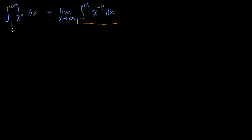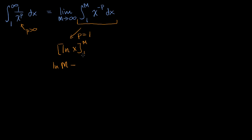There are a couple of conditions. We already know that p is greater than zero, but there are two situations. There's one situation when p is equal to one. If p equals one, then this is just the integral of one over x, so this is going to be the natural log of x evaluated from one to m. That gives us the natural log of m minus the natural log of one. The natural log of one is just zero, so when p equals one, this integral from one to m comes down to the natural log of m.